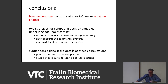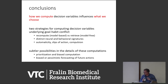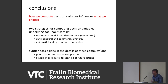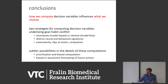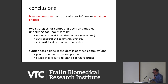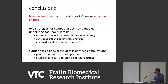And that's it. So what I have tried to tell you today, in the grand theme, is that how we compute the decision variables that guide our choices influences what we actually choose. There's a simple story in which we have two strategies for computing decision variables underlying this kind of deliberation versus habitual or automaticity conflict — the strategy of model-based recomputation versus model-free action.